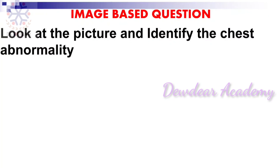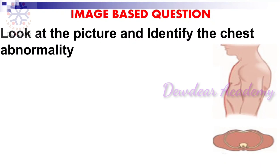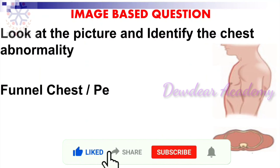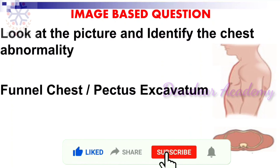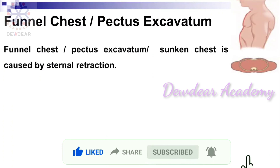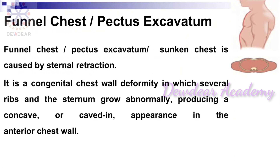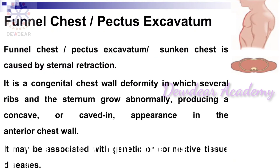Next: look at the picture and identify the chest abnormality. The answer is funnel chest, also known as pectus excavatum. It is caused by sternal retraction and is a congenital chest wall deformity in which several ribs and the sternum grow abnormally, producing a concave or caved-in appearance in the anterior chest wall. It may be associated with genetic or connective tissue diseases.